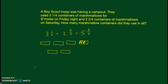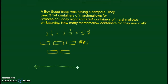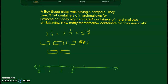I'll show you on a number line again. I draw a number line from zero to six. My starting point is three and one-fourth, so I'll separate the sections into one-fourth intervals.